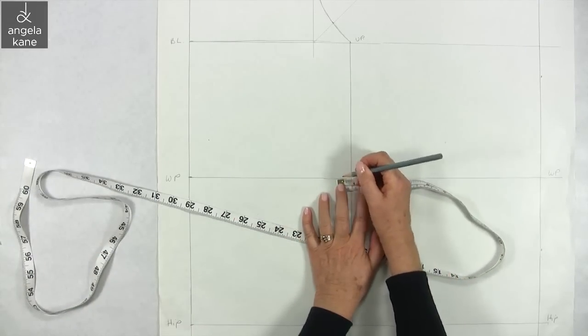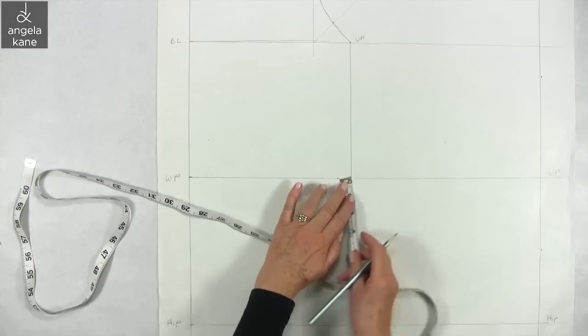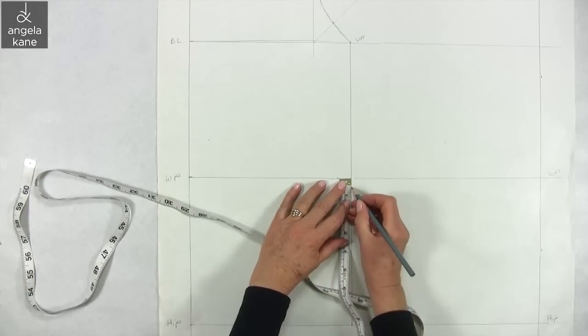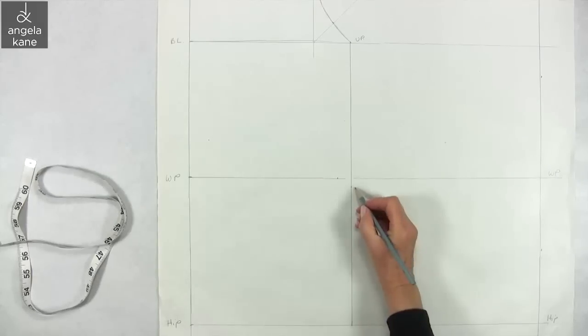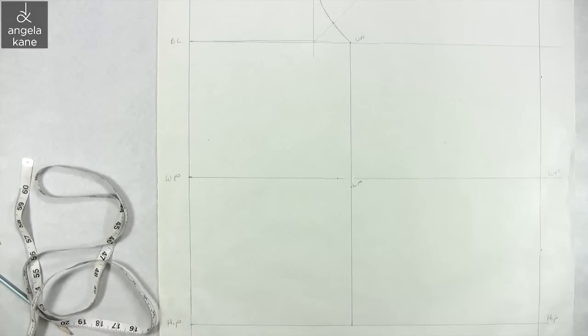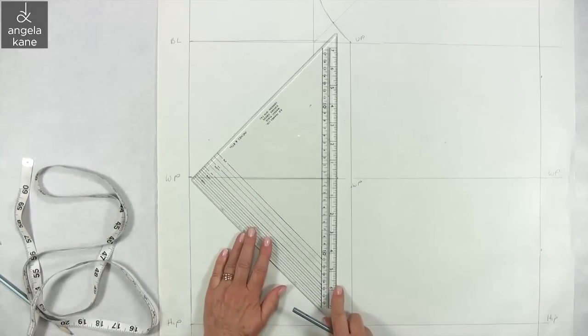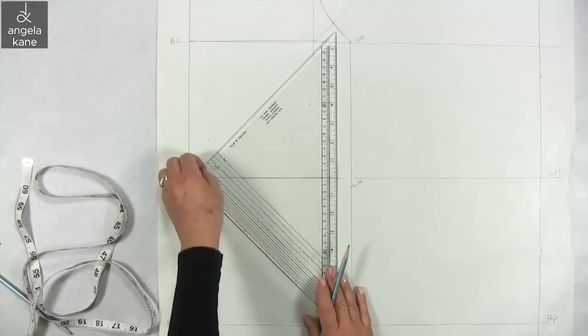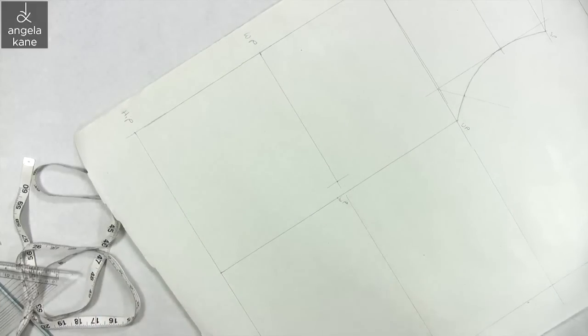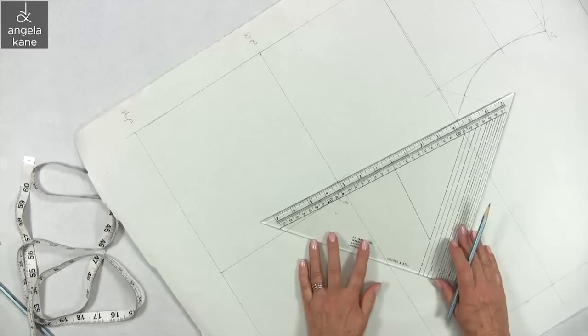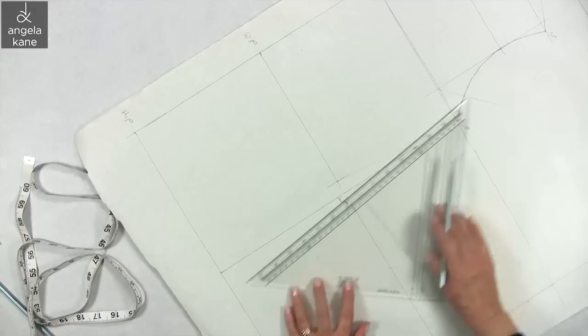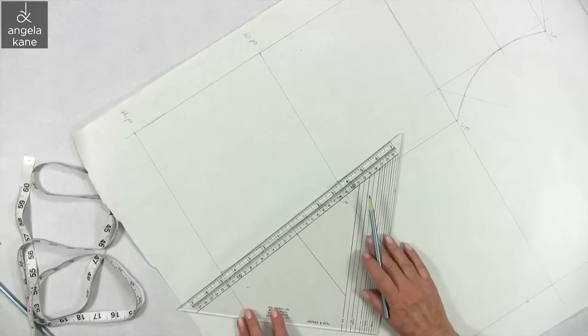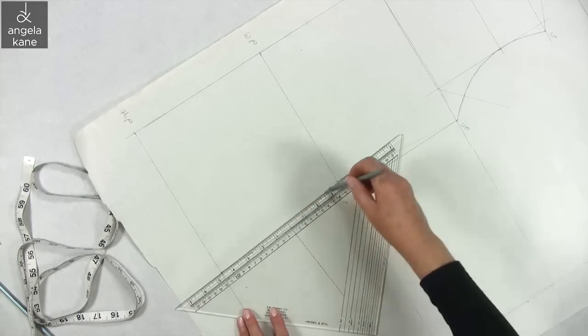Then to shape the side seam, at the waist measure in three quarters of an inch from where this line crosses the waist. Then measure down a quarter of an inch. This is the true waistline. Redraw the side seam. Shape the side seam passing through this point and flatten out at HP and UP.